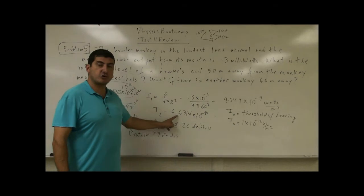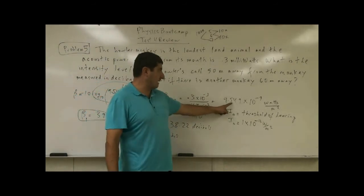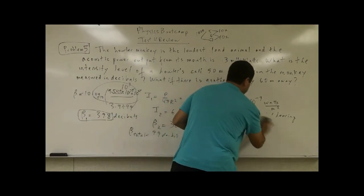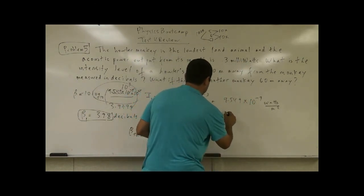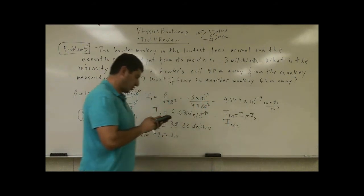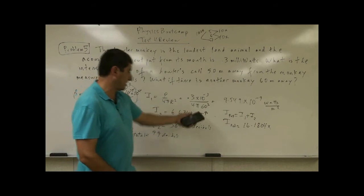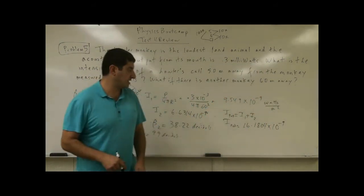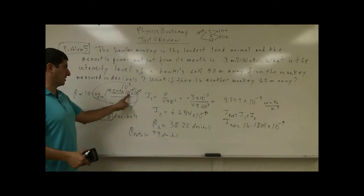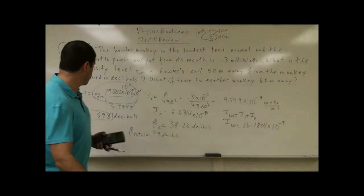Here's what you have to do. You have to take their intensities in the non-log scale, their actual intensity, 6.6314, add it to 9.549 times 10 to the minus 9. Then you can take the log of that. So you have to say I total is equal to I₁ plus I₂. So you get 16.1804 times, they're both 10 to the minus 9. So the total intensity is 16.1804 times 10 to the minus 9 watts per meter squared. Then I can put that here, multiply it by a thousand. So I'm going to take log of 16,180. I'm going to do the same procedure here.